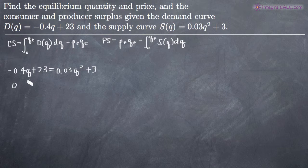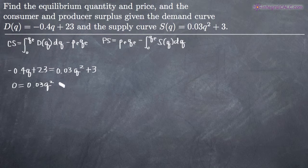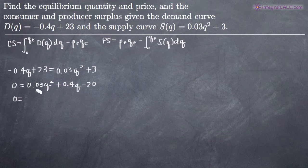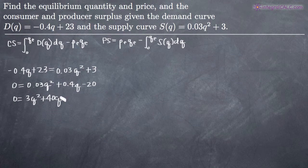We'll move everything from the left side over to the right so that our q squared term stays positive. So we'll get 0.03q squared, and then we've added 0.4q. Then we subtract 23 from both sides, giving us minus 20. Now I'm going to multiply through by 100 to eliminate the decimals: 0.03 times 100 gives us 3q squared, 0.4 times 100 gives us 40q, and negative 20 times 100 gives us negative 2000.